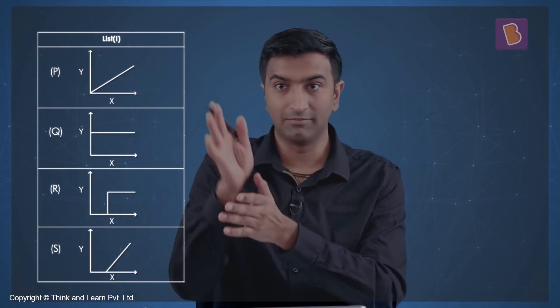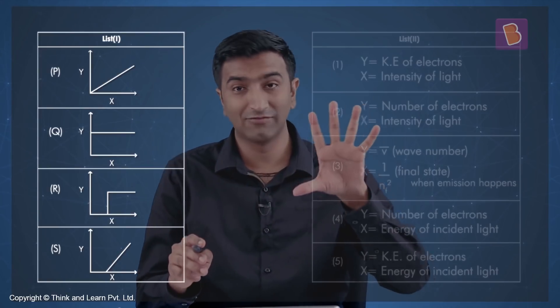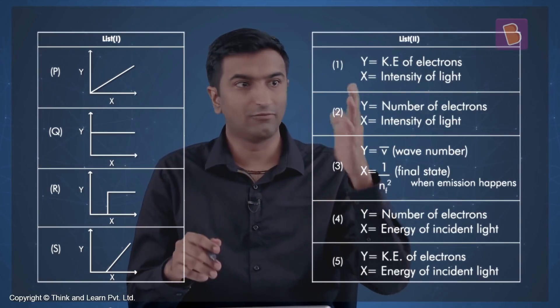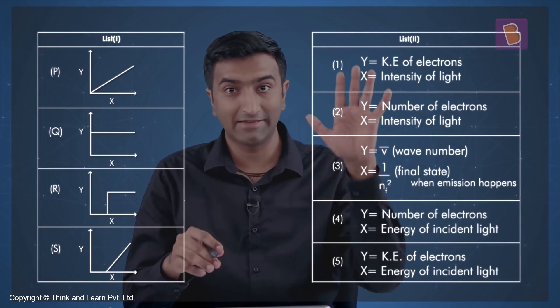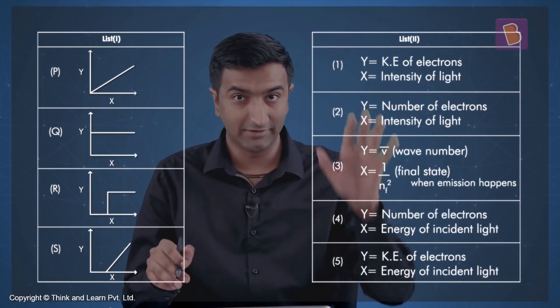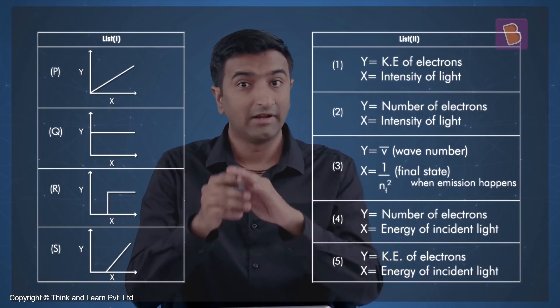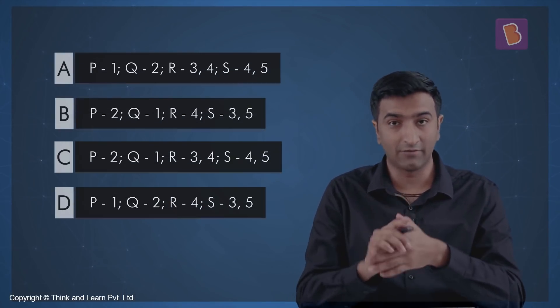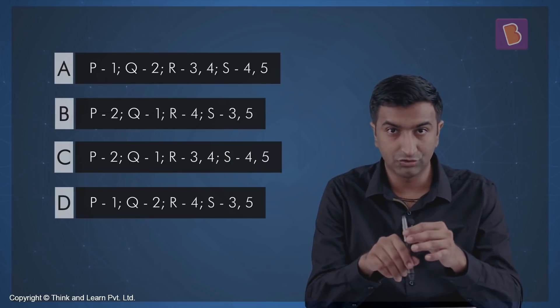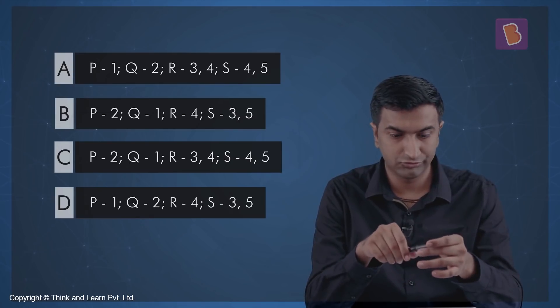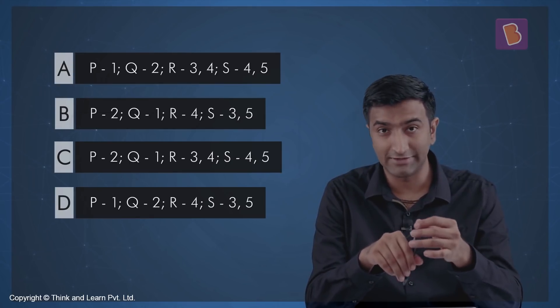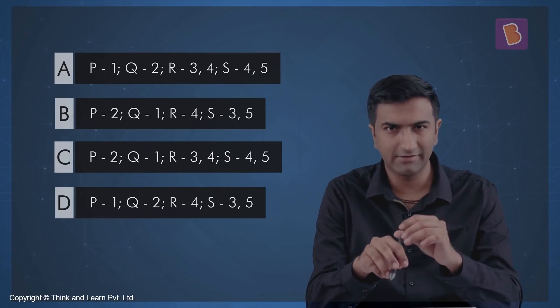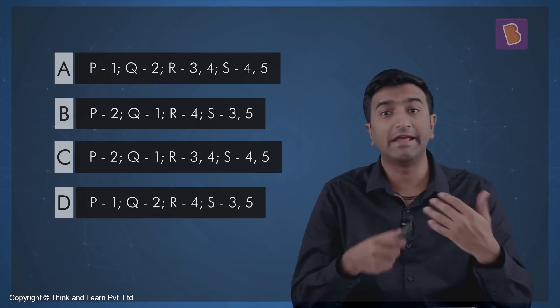We have many graphs here — P, Q, R, S — and we need to match them with the y and x axes of these graphs. There are five options to choose from. This is an interesting question; let's go to the basics of what we're really testing here.